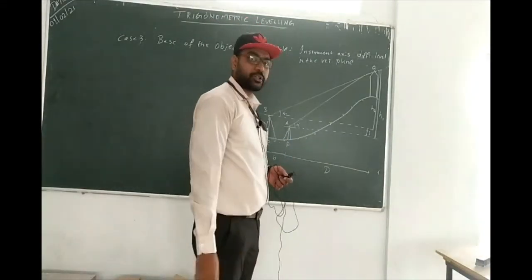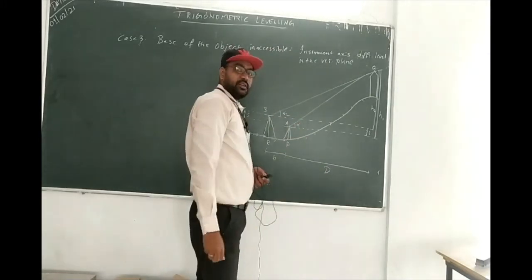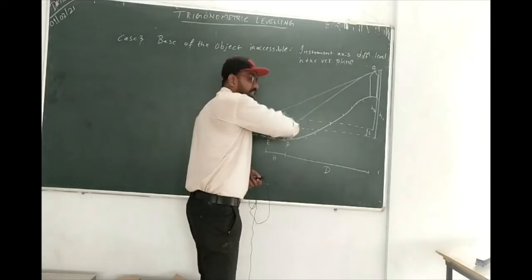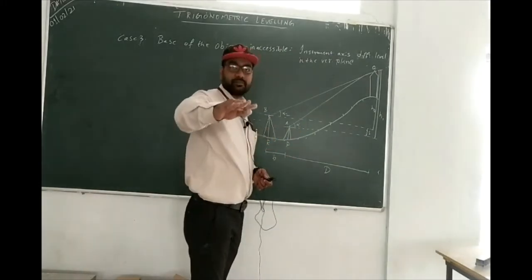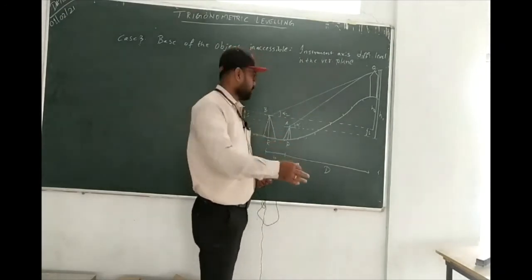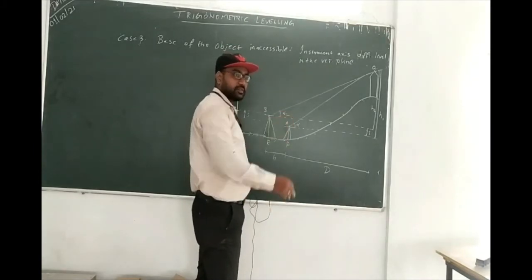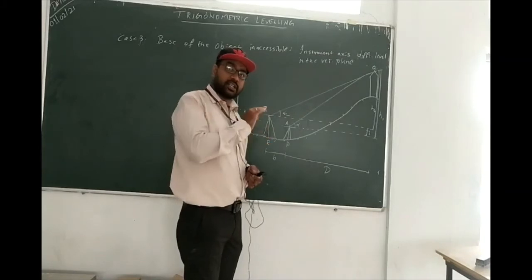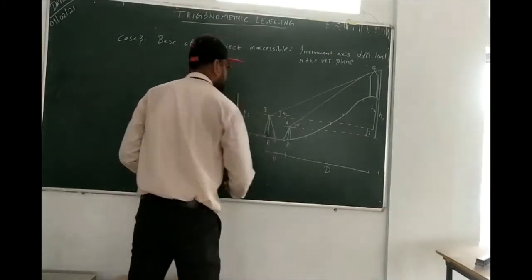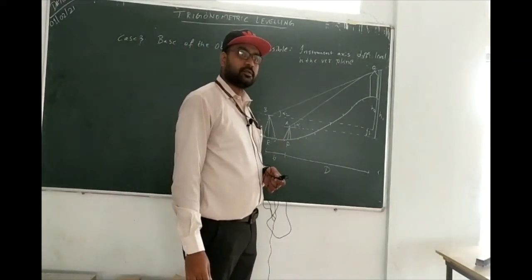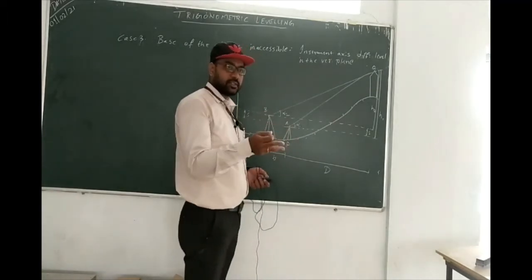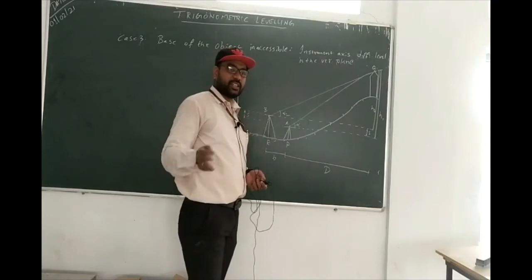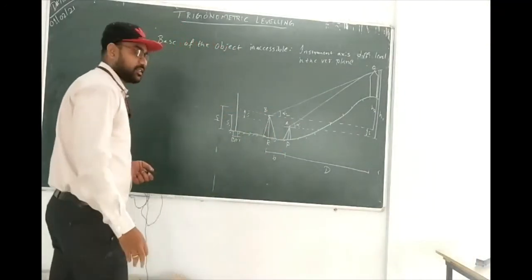Why different elevation? Because the ground is undulated, so it's difficult to always keep instruments at the same elevation. That's one reason why case three exists. In case two we keep the same level, but in case three the instrument axes are at different levels — those are the real field conditions.